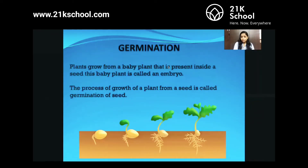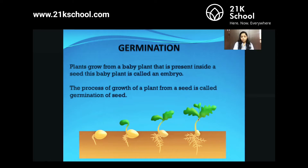Germination is a process where the seed gets converted into a mother plant. How does this happen? When we sow the seed in soil and it gets proper conditions, it will germinate — it will get roots and it will get a shoot also, and slowly it will turn into a mother plant.